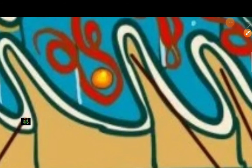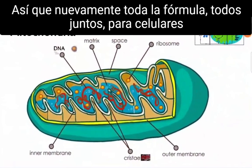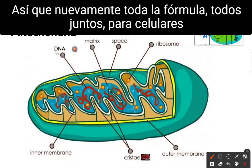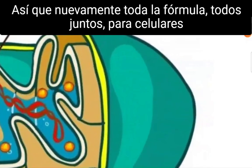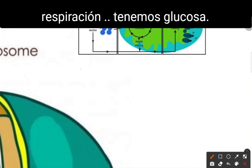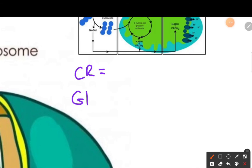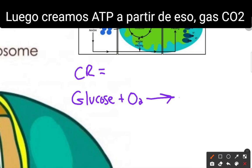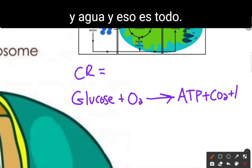So the whole formula for cellular respiration is: glucose plus oxygen goes in, and we create ATP, CO2 gas, and water. And that's pretty much it.